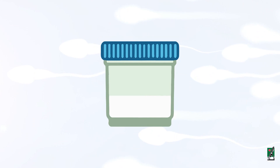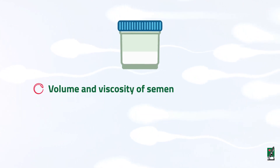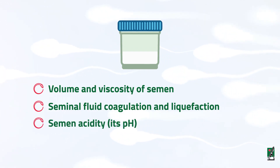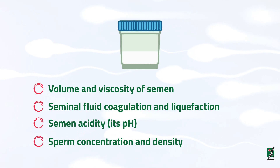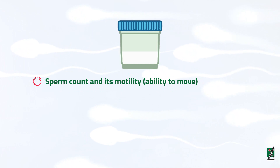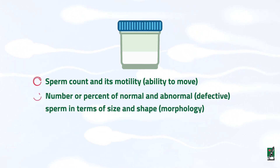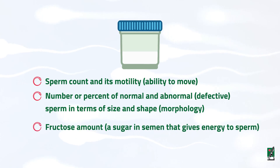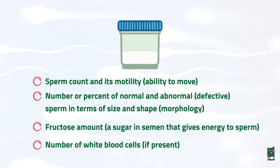A typical semen analysis measures volume and viscosity of semen, seminal fluid coagulation and liquefaction, semen acidity and pH, sperm concentration and density, sperm count and its motility (ability to move), number or percent of normal and abnormal (defective) sperm in terms of size and shape (morphology), fructose amount — a sugar in semen that gives energy to sperm — and the number of white blood cells if present.